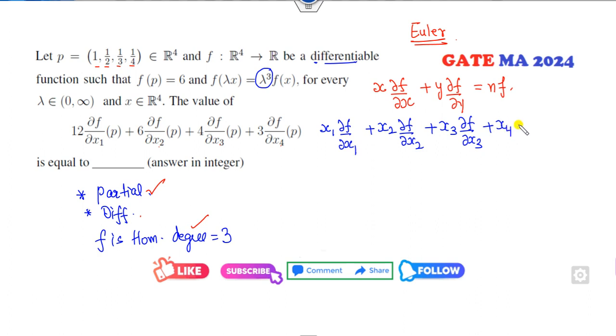Which is equal to n into f. Now the point is given to you as point p, because your target is to find the function values at point p. Now I can substitute it. What is the x1 value of p? 1. This is my f x1 at point p.